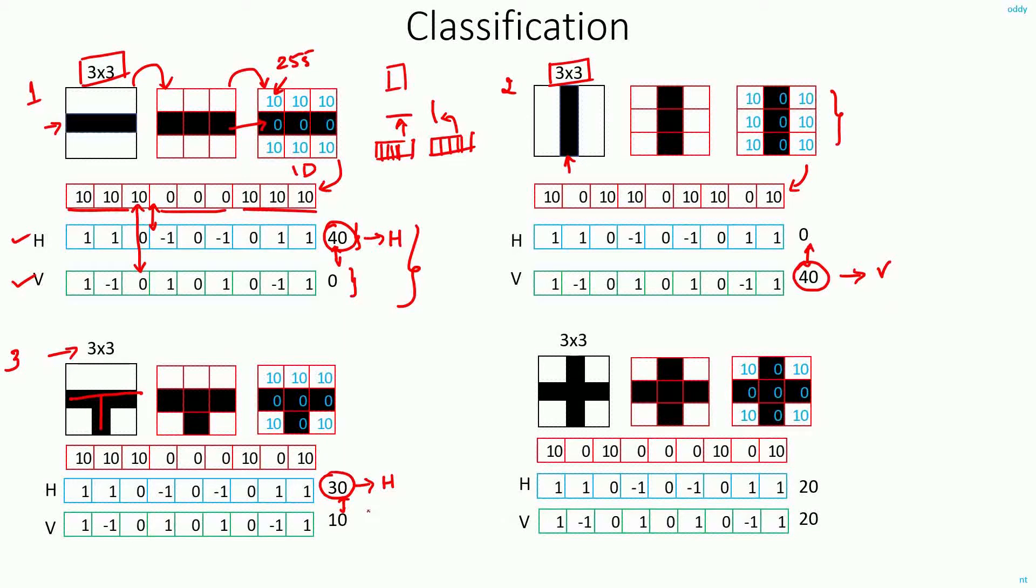But here, you can see that since this value is not 0, I can't just straight away conclude that this image has only a horizontal line. It also looks like having a partial vertical line. So that way, by looking at these outputs, you can have more insights into how the image is looking.